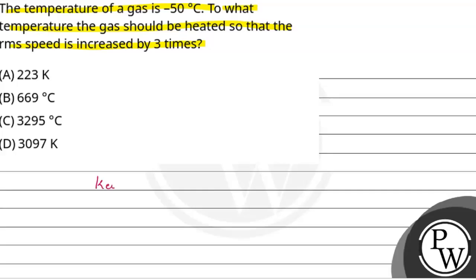यहाँ जो concept हम use करेंगे, वो है VRMS, यानि root mean square velocity. इसकी value क्या होती है - root 3kT over m. Root 3kT over m root mean square velocity होता है.